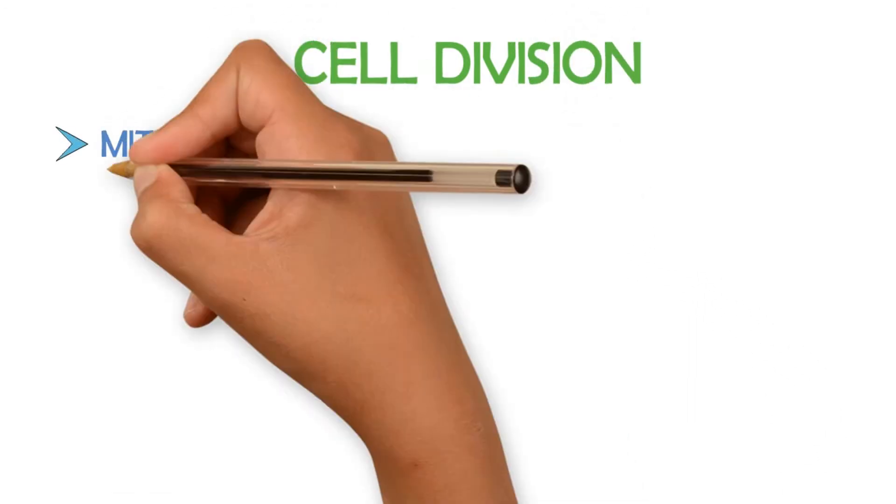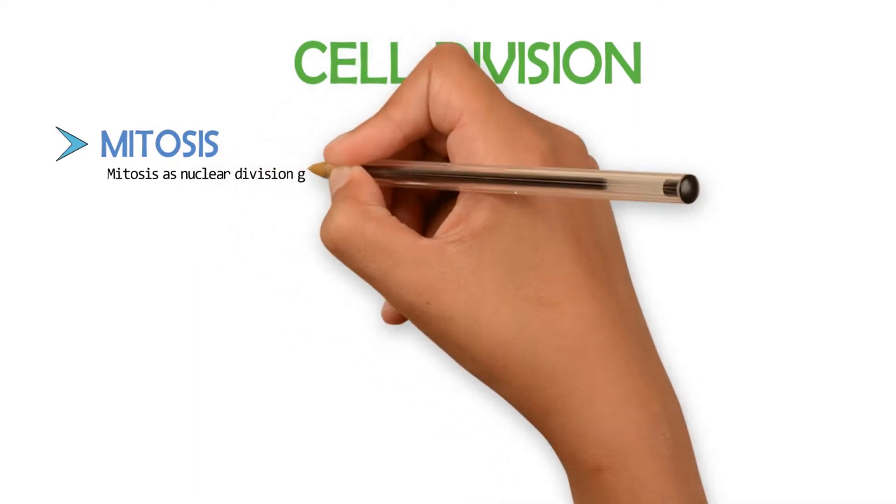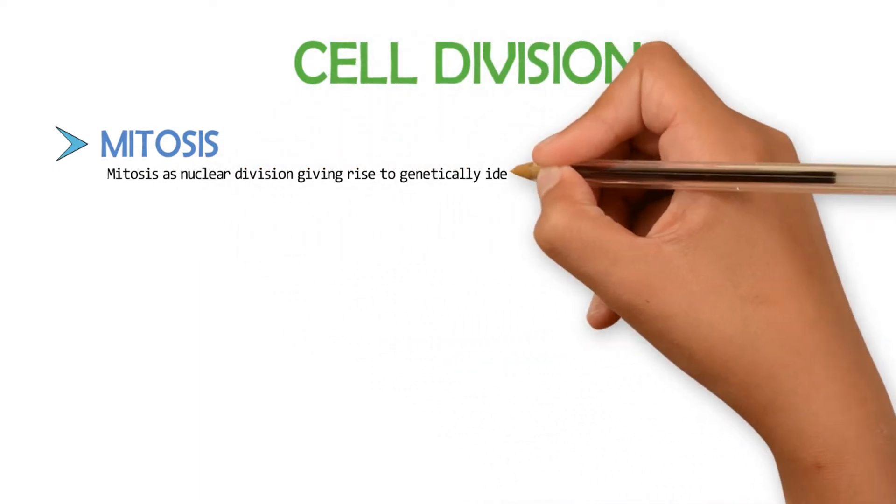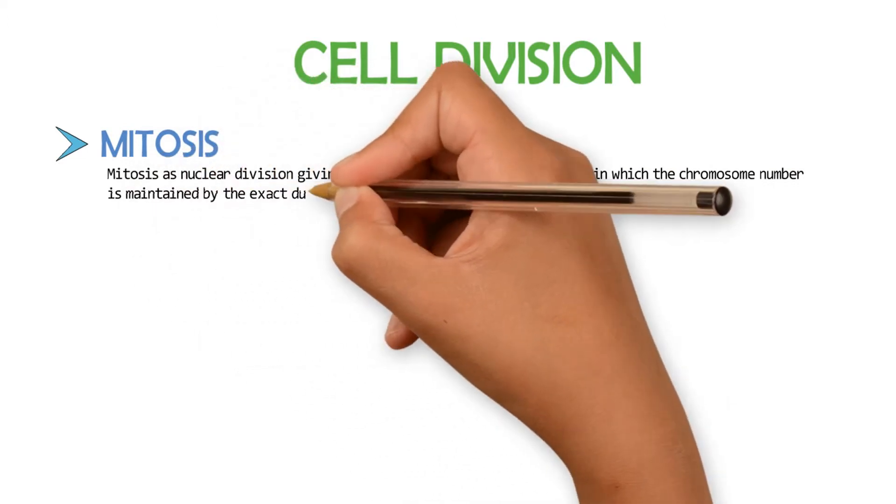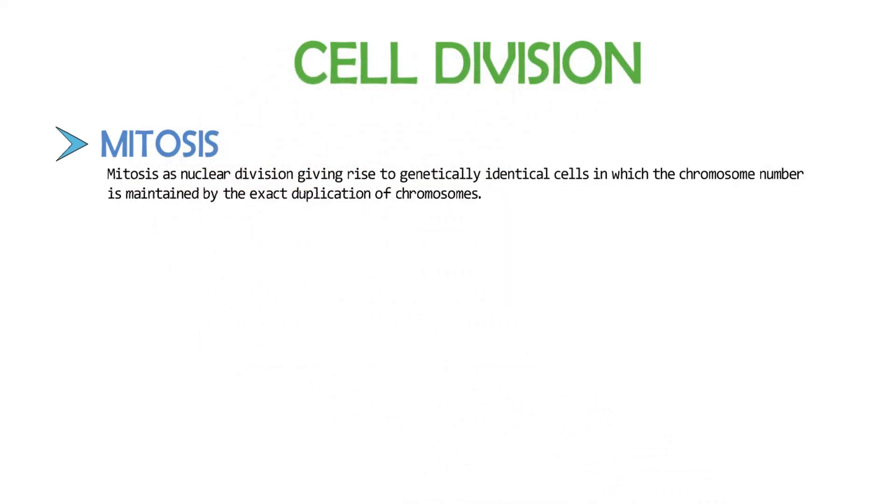Mitosis. Mitosis is nuclear division giving rise to genetically identical cells in which the chromosome number is maintained by the exact duplication of chromosomes.